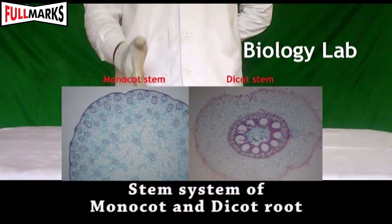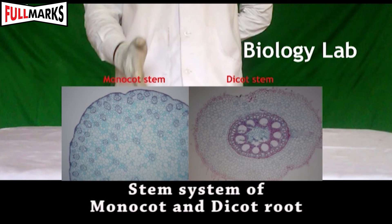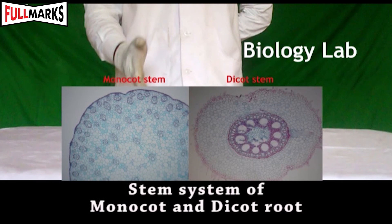Now look at the stem of the peas plant — whether woody, fleshy, branched, or unbranched. Observe the transverse section of the slide showing monocot and dicot stem with the arrangement of vascular bundles. Finally, record your observations.